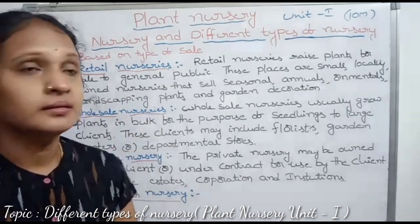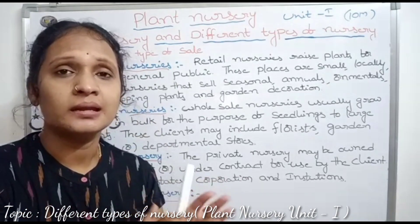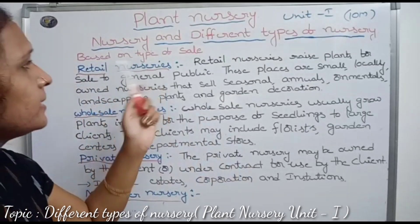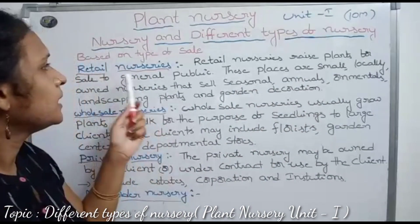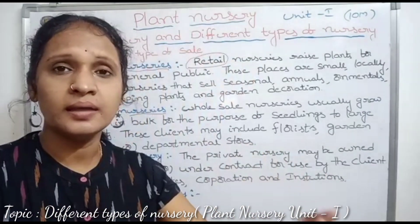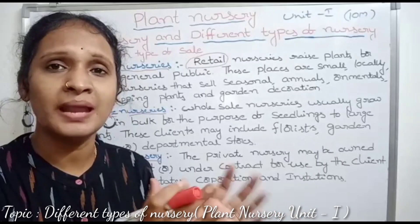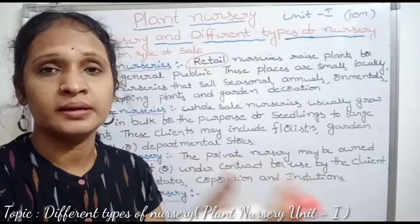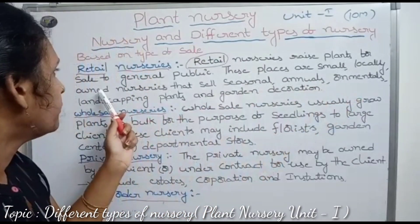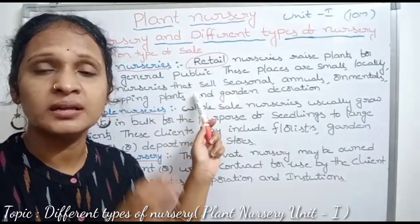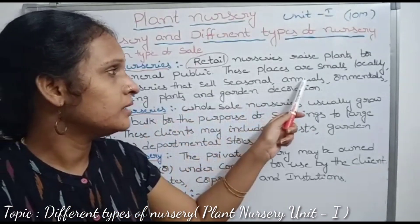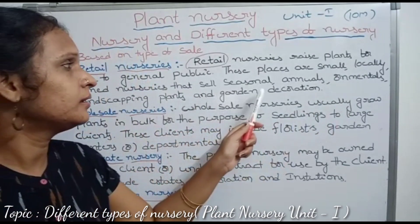Based on the types of sale, the next classification: first one, retail nursery. Retail nursery raises plants for sale to the general public. These are small, locally based nurseries. They sell seasonal plants, annuals, ornamentals, landscaping plants, and garden decorations.